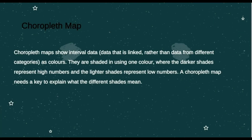The next map we're going to define is the choropleth map. This shows interval data — data that is linked — so the map will speak on this type of data alone. Usually the data is shown as colors, shaded using one color where darker shades represent higher numbers and lighter shades represent lower numbers. A choropleth map needs a key to explain what the different shades mean.